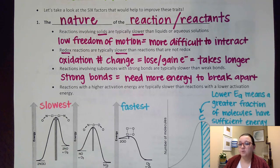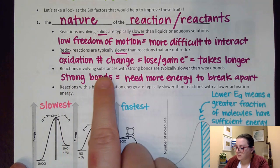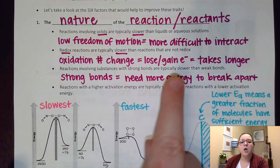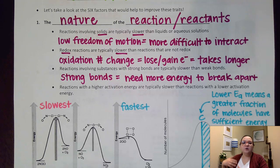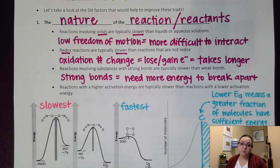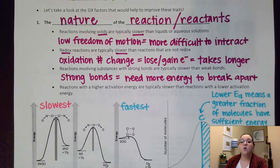Think back to some of the reactions that we know are for sure redox - things like synthesis or single replacement reactions, where we know we have things that have oxidation numbers that are changing. Those reactions tend to be slower than, say, a reaction where oxidation numbers don't change, like maybe a double replacement reaction. Also, reactions involving substances with really strong bonds are typically slower. Part of what we're trying to do in a chemical reaction is break the original bonds so that we can form new bonds. And so if those original bonds are really strong and hard to break, you're going to need a lot of energy to break those apart, so it might take a lot longer for that reaction to take place. Along those same lines, reactions with a higher activation energy are typically slower than reactions with a lower activation energy.